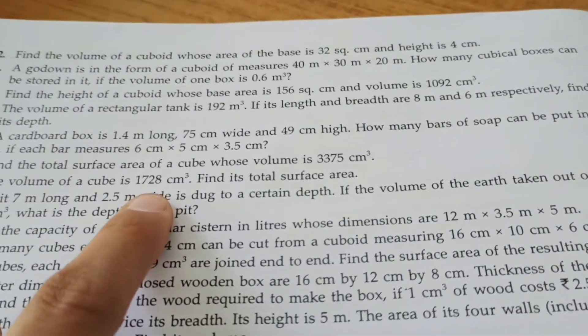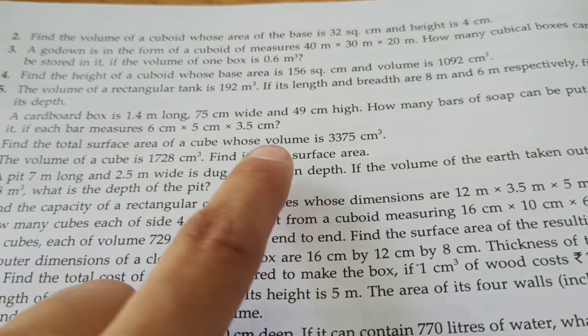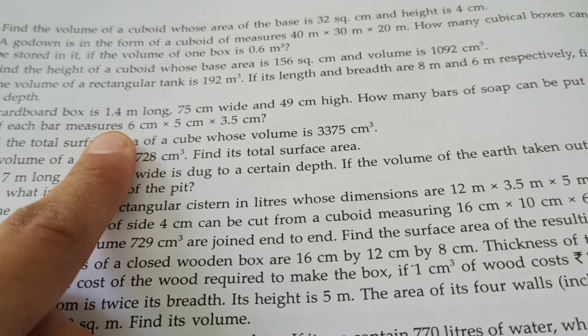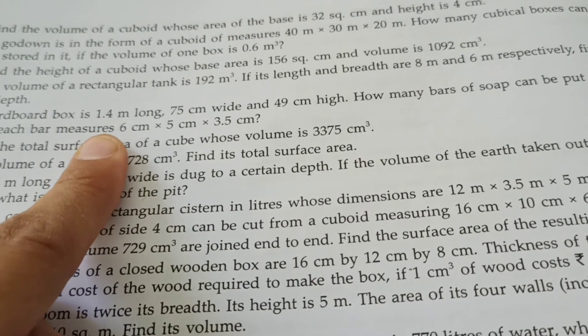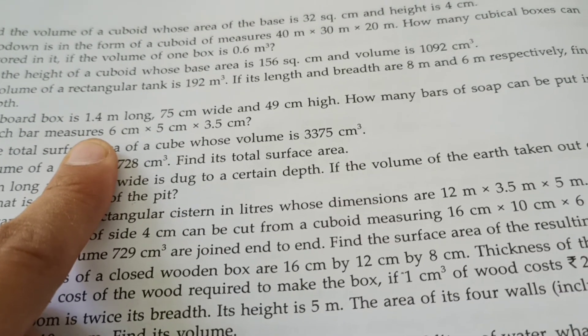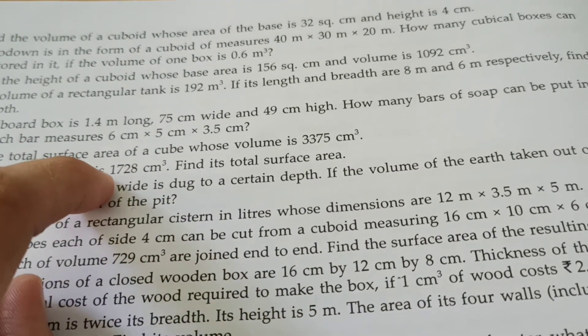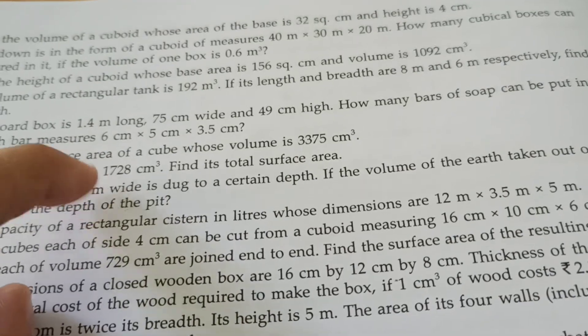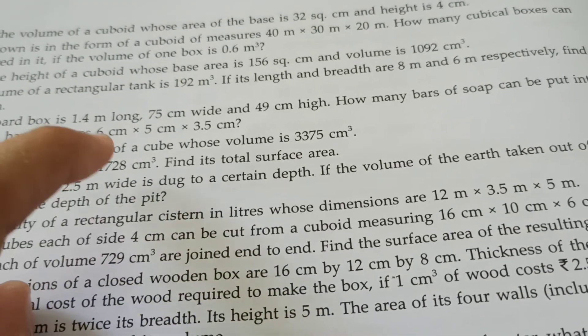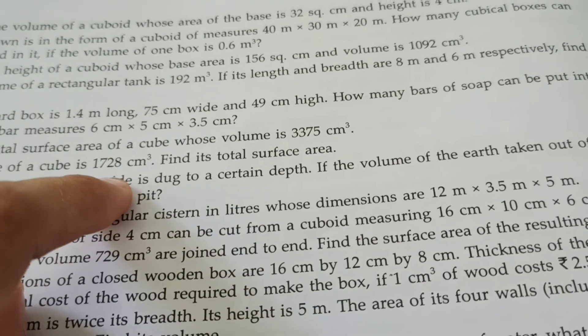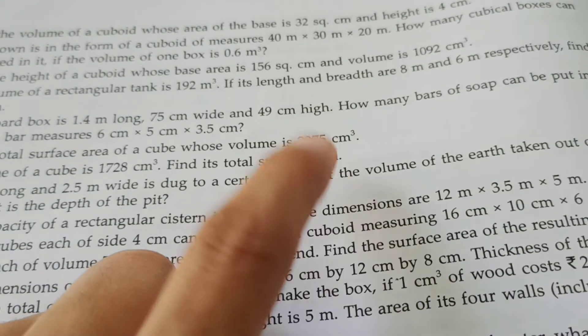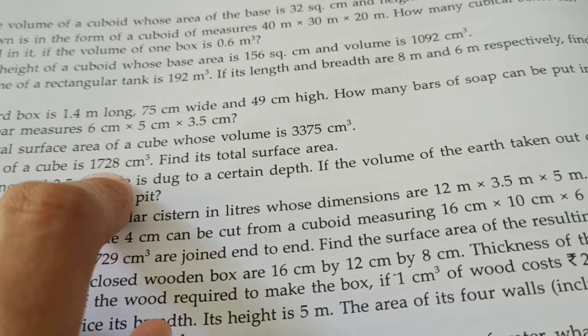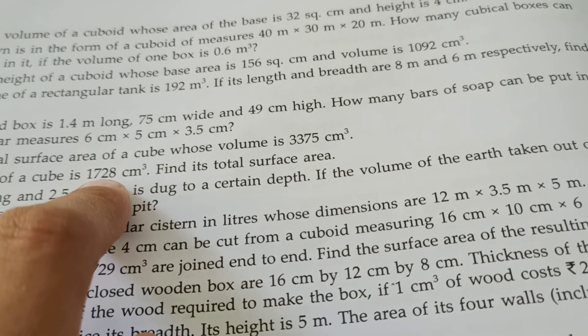Now volume of a cube is given to us: 1728 cm cube. Find its total surface area. Again, this is 1728. 8 gives us 2 as the last digit, so the last digit will be 2. And we learned cube roots in chapter 12, right? And 1 remains 1, so 12 is the cube root of 1728. And find its total surface area. Total surface area formula is 6L square, 6 multiplied by - here L is 12.